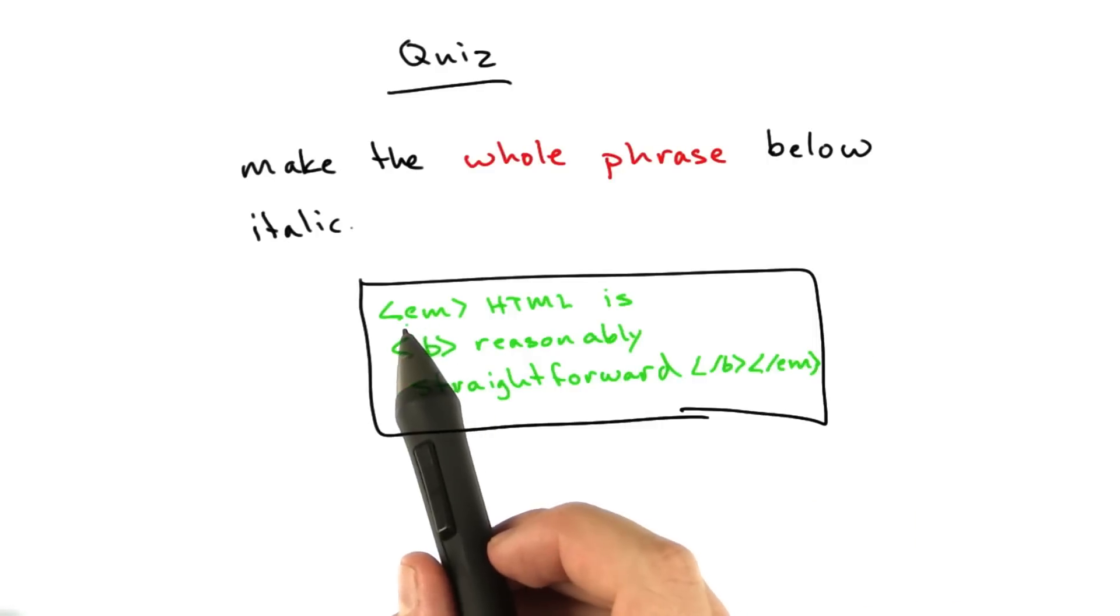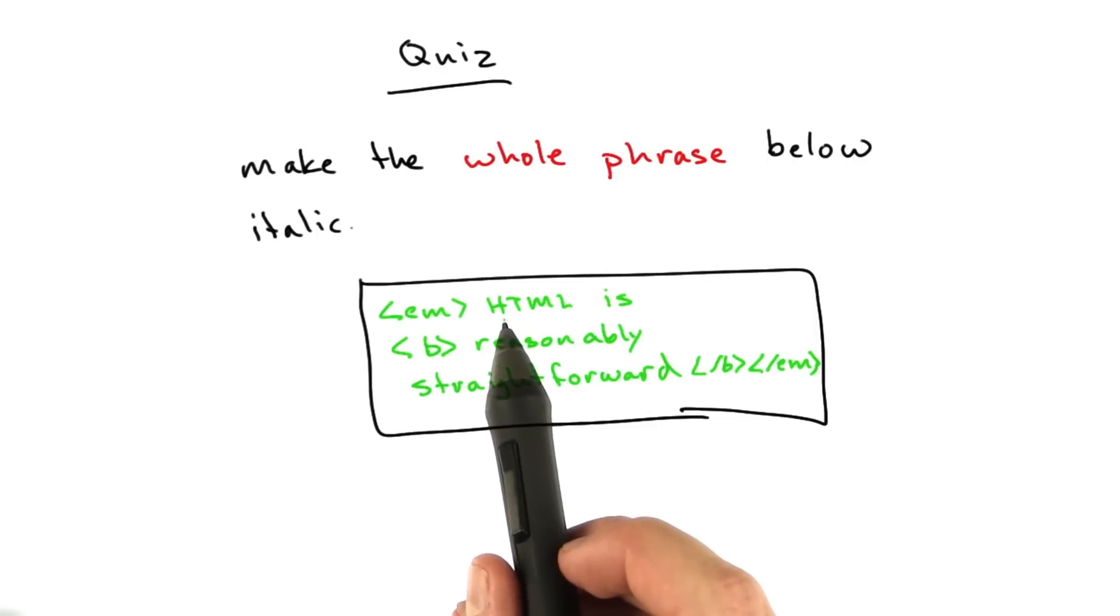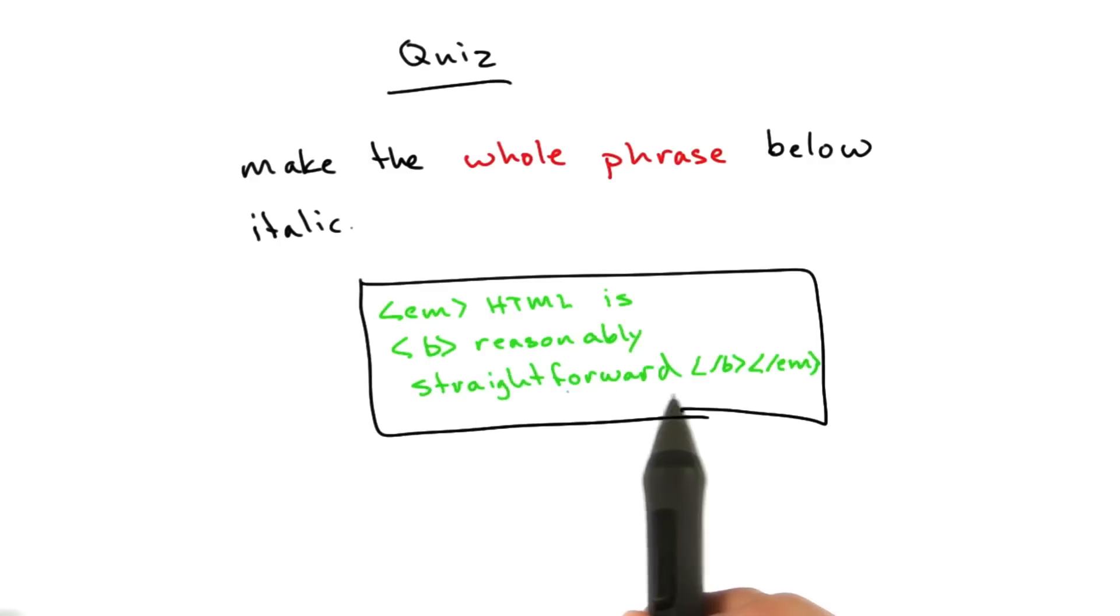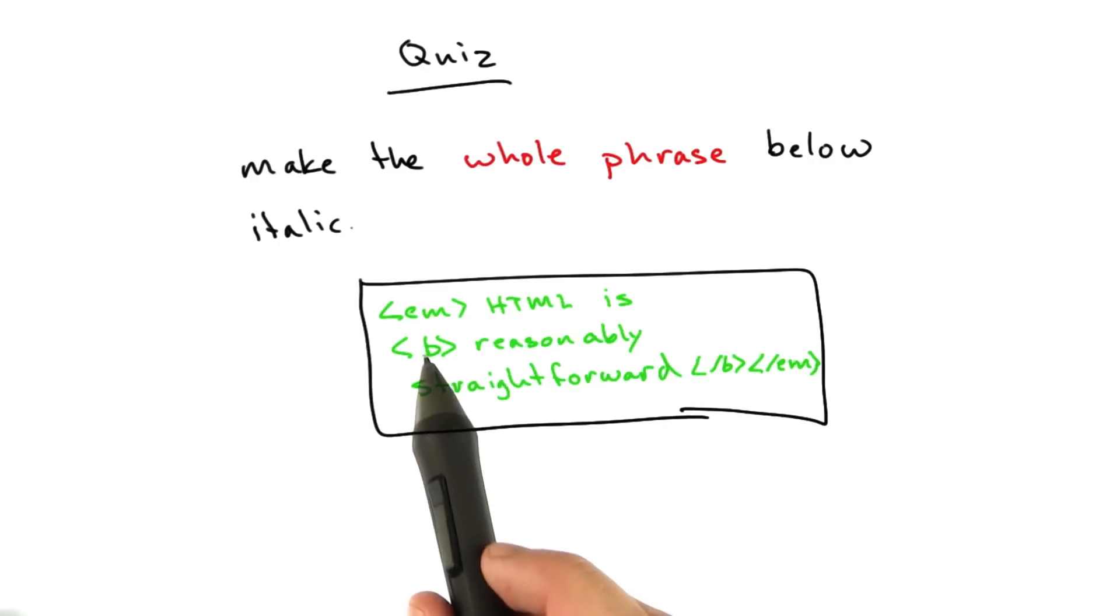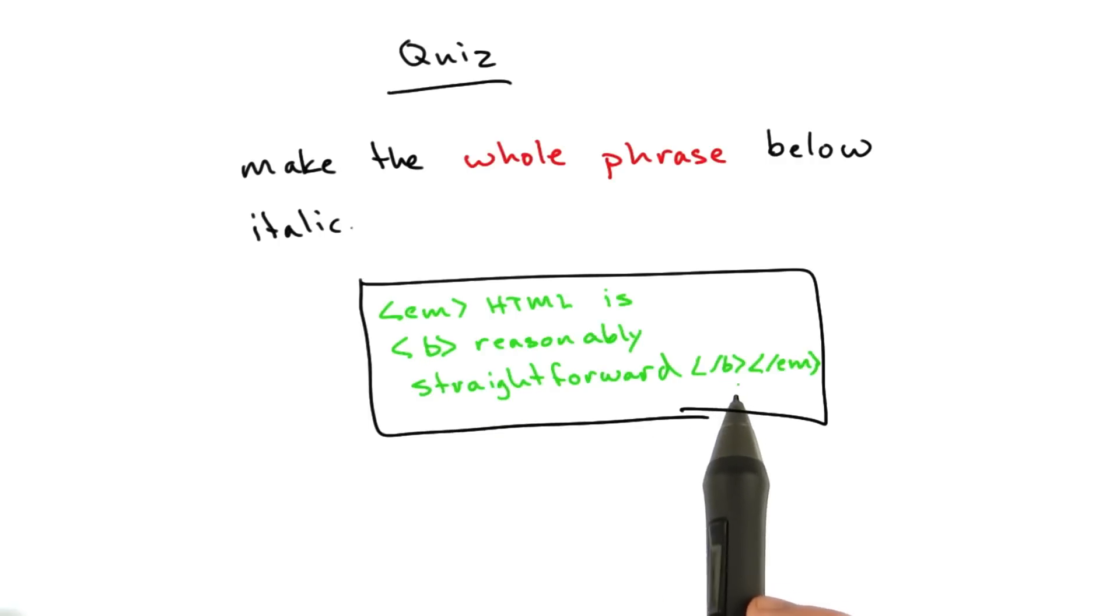The answer should look like this. You've got your opening m tag, the phrase HTML is reasonably straightforward, and then the closing m tag. And our b tags are still where we left them.